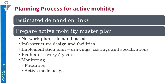The planning process for active mobility will include estimating demand on the links and then preparing an active mobility master plan. The active mobility master plan should have a network plan based on estimated demand through travel demand models, a detailed infrastructure design and facilities plan, and a detailed implementation plan including drawings, costings, and specifications. Such a plan should be evaluated every 5 years, and facilities should be monitored for changes in the number of fatalities and active mode usage in the city.